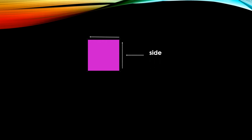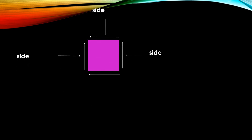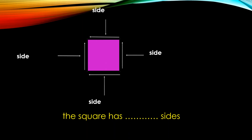What's this? We said it's a square. Okay, what's this? It's a side. This is a side, and this is a side, and this is a side, and this is a side. So how many sides do I have? One, two, three, four. So the square has four sides.